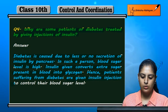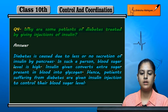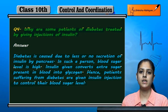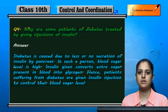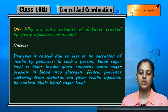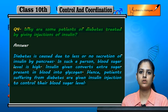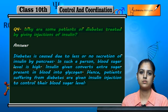Hence, patients suffering from diabetes are given insulin injections to control their blood sugar level. Blood sugar level को control करने के लिए insulin दिया जाता है, क्योंकि वो extra sugar को balance कर देता है। This is the reason why injections of insulin are given to some patients.